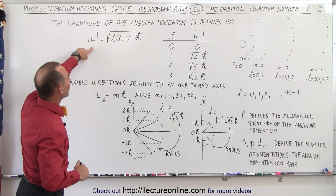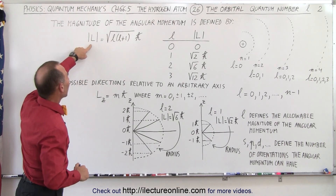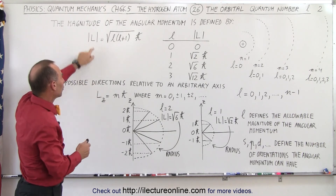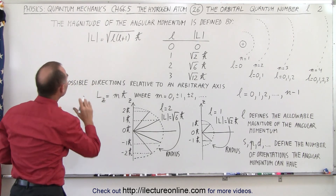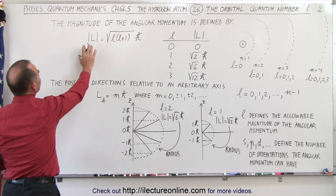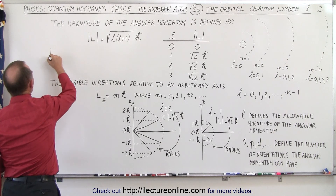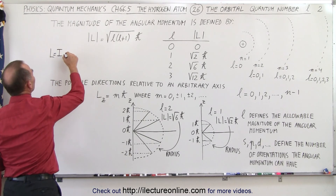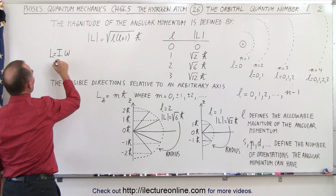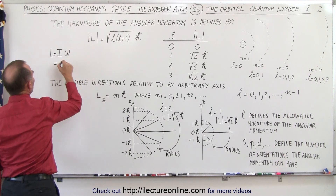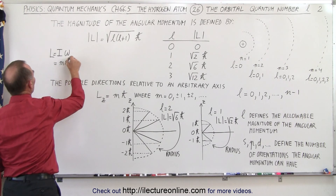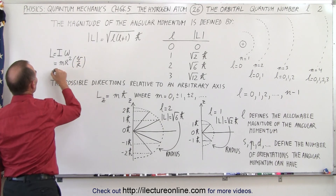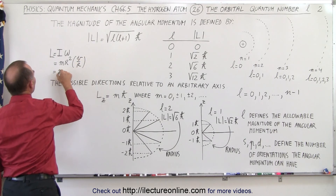The magnitude of the angular momentum is defined as the magnitude of L. In classical mechanics, the angular momentum can be defined as the moment of inertia times omega, the angular velocity, which for the electron would be mr squared times v over r.